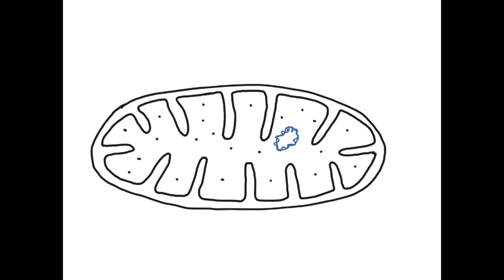Inside there are different structures present, which we will be labeling once we complete the drawing. On the folds are present small structures which have a globular head and a stalk. This is present on all the folds, but I have shown only on two folds here.